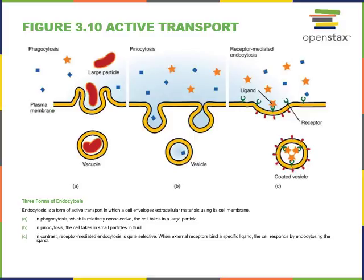Receptor-mediated endocytosis is another form, where a cell takes in particles with a specific structure that binds to receptors on the plasma membrane surface. When these specific ligands bind to their receptors, the plasma membrane buds inward and forms a coated vesicle — named for the protein coat involved in recognizing the particle, binding the receptor, and forming the inward budding structure.